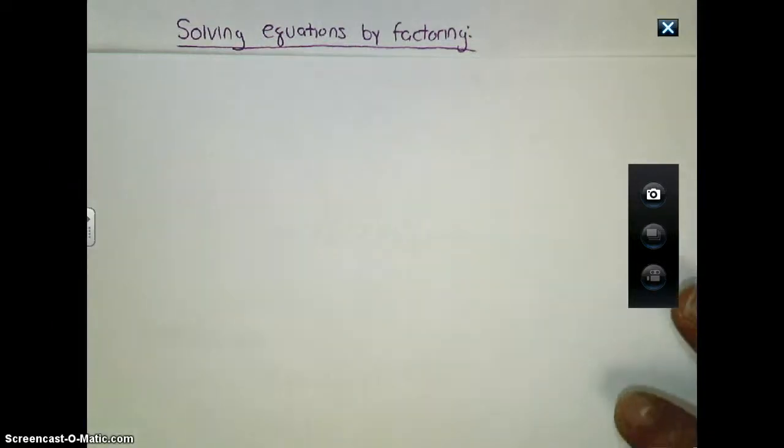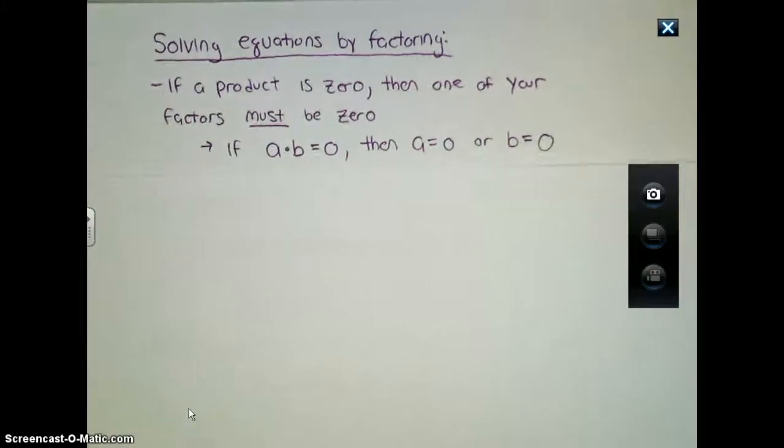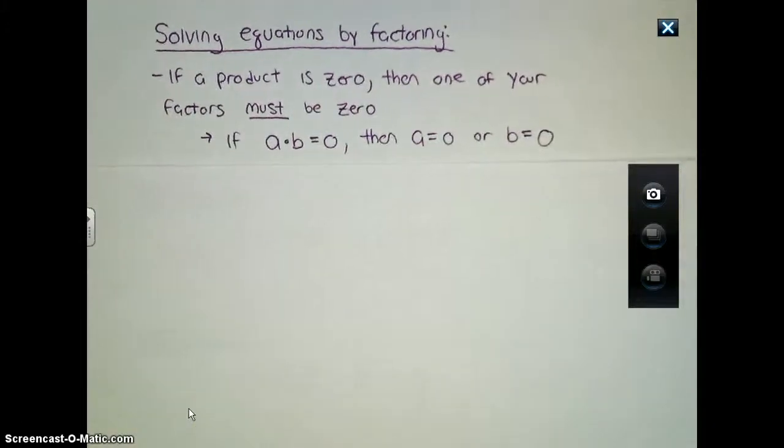The reason we can use factoring as our technique for solving an equation is because of this fact right here. If a product is zero, which means if you multiply two numbers and get an answer of zero, then one of your factors must be a zero. There's no possible way to have an answer of zero through multiplication unless one of the factors is equal to zero.